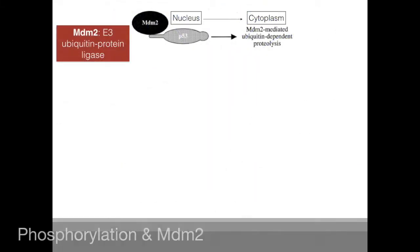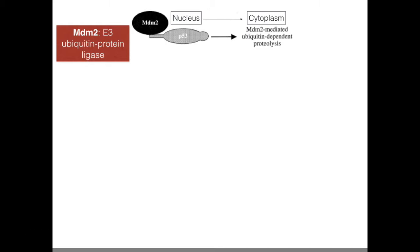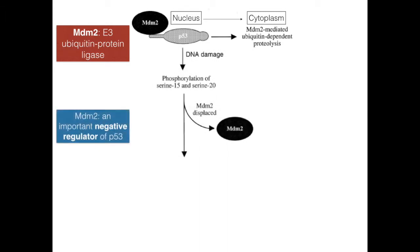P53 has a short half-life and is maintained at low levels in a normal cell, existing in its off-state bound to MDM2. In complex with MDM2, P53 is targeted for degradation by the recruitment of proteins involved in ubiquitin-dependent proteolysis and nuclear export. With DNA damage, phosphorylation of P53 at serine 15 and 20 at the N-terminal region displaces MDM2, promoting accumulation of P53.